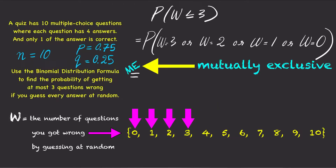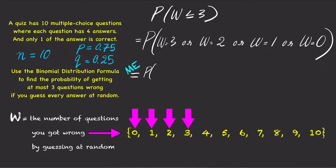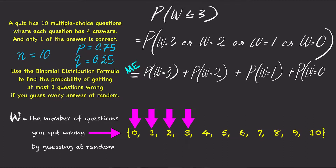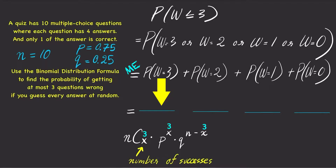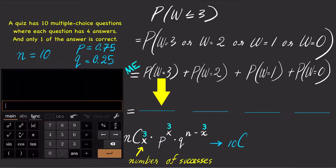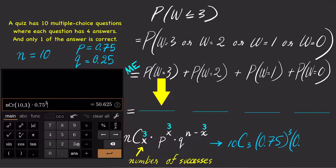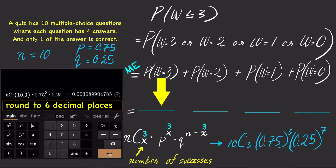Since each of these events are mutually exclusive, we can use the addition rule and rewrite them as P(w=3) + P(w=2) + P(w=1) + P(w=0). For P(w=3), the number of successes is 3. Using the binomial distribution formula, we get C(10,3) times 0.75 to the third times 0.25 to the 7. Type this into your calculator and we get 0.003090.